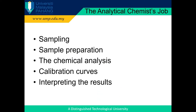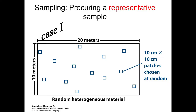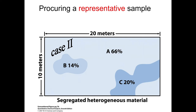If you are working as an analytical chemist, you will be dealing with sampling, sample preparation, chemical analysis, calibration curve, and interpreting the results obtained. The sampling process is simply a process to collect samples. Different samples will require different kinds of sampling processes.